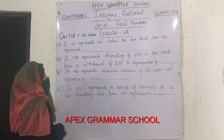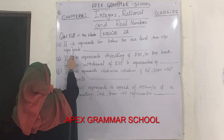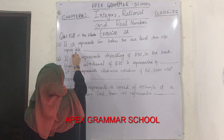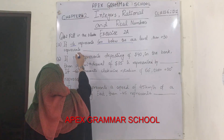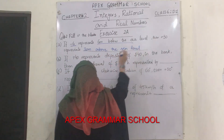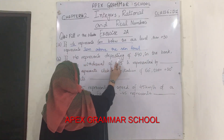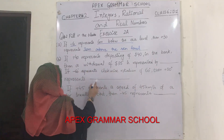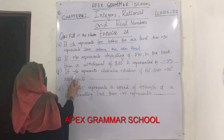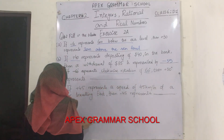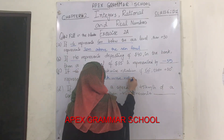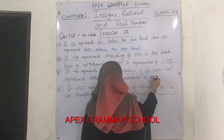Exercise 2A, Question number 2. There are some fill-in-the-blanks. First: if minus 6 represents 6 meters below sea level, then plus 30 will represent 30 meters above sea level. Part D: if plus 40 represents depositing 40 dollars in the bank, then a withdrawal of 35 dollars will be represented by minus 35. Part C: if minus 60 degrees represents a clockwise rotation of 60 degrees, then plus 30 represents an anti-clockwise rotation of 30 degrees.